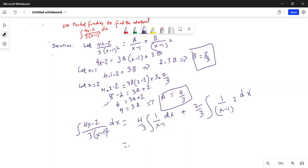This equals 4/3 times—the integration of 1 over (x minus 1) is ln absolute value of (x minus 1).